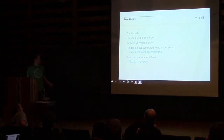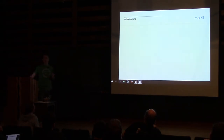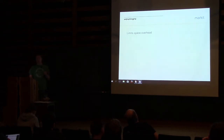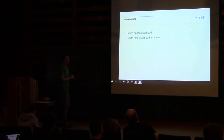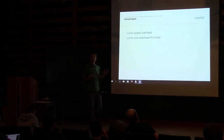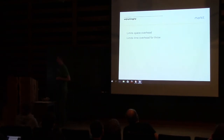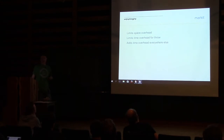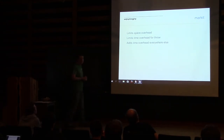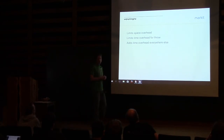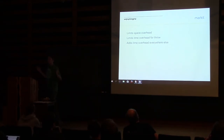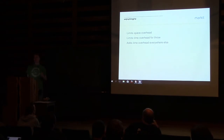The setjmp/longjmp approach limits both space overhead and time overhead for throw, meaning that in the event of an error, a throw is still slow but not quite as bad as the table-driven approach. The downside is it adds time overhead everywhere else — it's not even theoretically a free abstraction. That's why a lot of modern compilers have switched to the table-driven approach: it has less overhead in most cases and is closer to the C++ ideal of not paying for what you don't use.